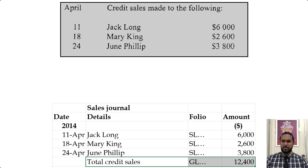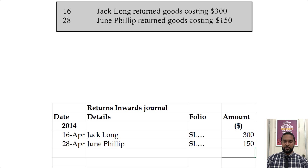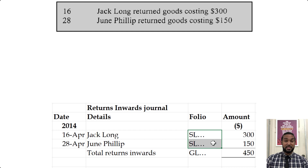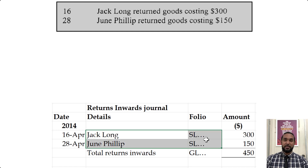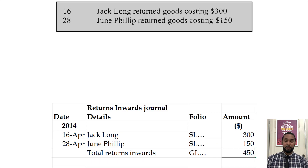For the returns journal: Jack Long returned goods and June Phillips returned goods, so we put those entries in. They would have reference numbers from the sales journal above — make sure to use those same numbers here since they are the same accounts. The returns inwards account also needs to be referenced in the general ledger.